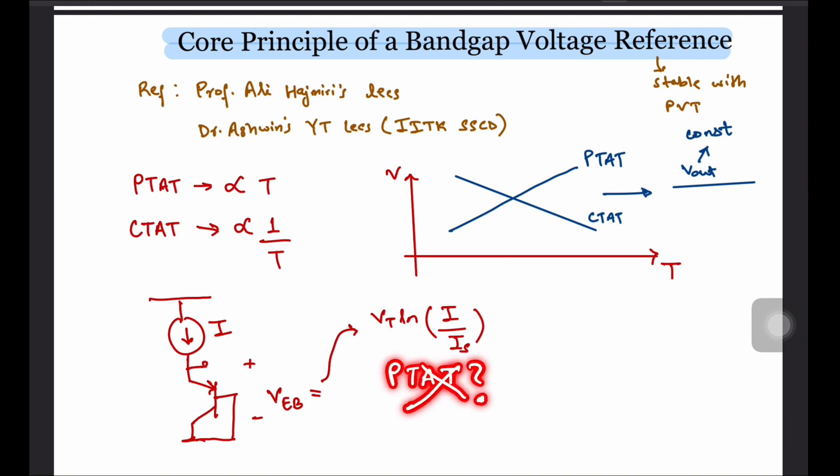Well, no. We also have an IS term, which is the saturation current. Those of you who might have done the solid state devices course would have recognized that IS depends on Ni square, where Ni is the intrinsic carrier concentration, and also the electron and hole mobilities in silicon, which have a temperature dependence. I encourage you to look at the temperature dependence of Ni and electron mobility with temperature.